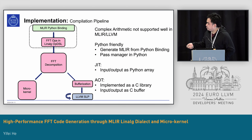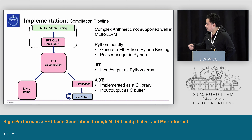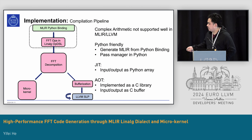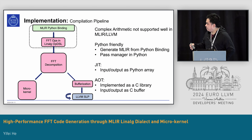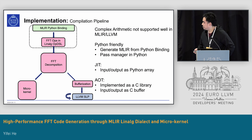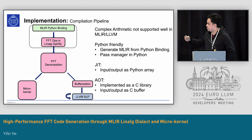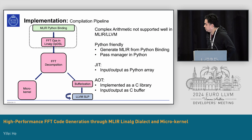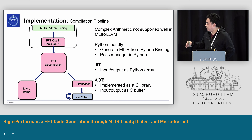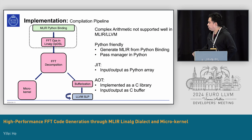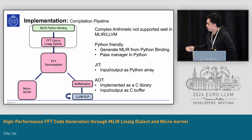After we perform the high-level transformation, we can either map some of the targets to the microkernels we implemented, and the other part goes through the bufferization of MLIR and then lowers down to LLVM. At this point, we utilize the vectorizer in LLVM called SLP, because the current MLIR vector dialect doesn't support complex values. The current design supports both JIT compilation mode and ahead-of-time compilation mode. In JIT mode, we can call the library from Python. In AOT mode, it is implemented as a C library with C buffer input/output.